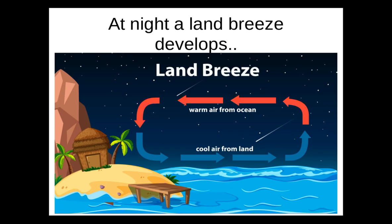At night, the roles reverse. The air over the ocean is now warmer than the air over the land. The land loses heat quickly after the sun goes down, and the air above it cools too. This can be compared to a blacktop road — during the day it heats up quickly and becomes very hot to walk on, but at night it has given up the added heat and is cool to the touch. The ocean, however, is able to hold on to the heat after the sun sets and does not lose it easily.